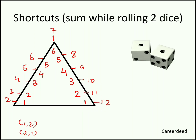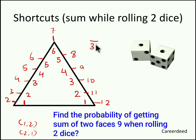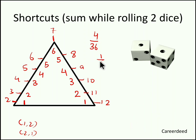Based on this, let's solve a problem. Find the probability of getting a sum of 9 on 2 faces while rolling 2 dice. While rolling 2 dice, we get sum 9 for 4 times. So 4 out of 36 is 1/9, which is the probability of getting a sum of 9.